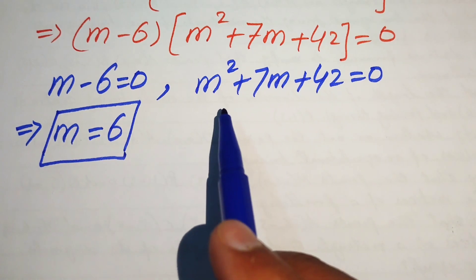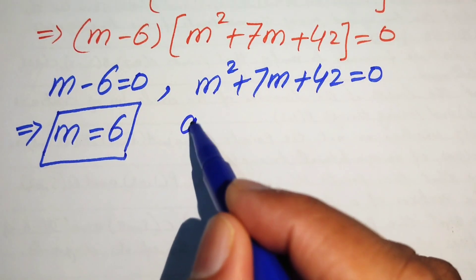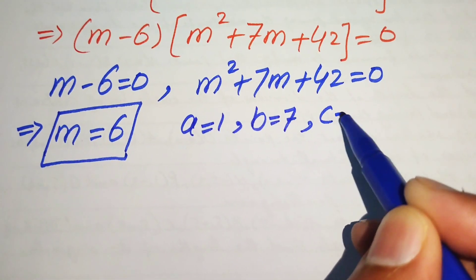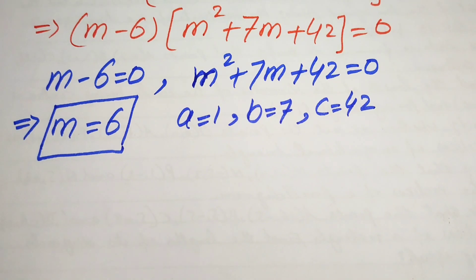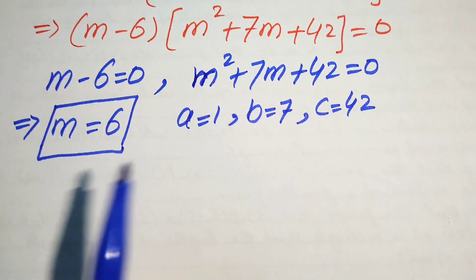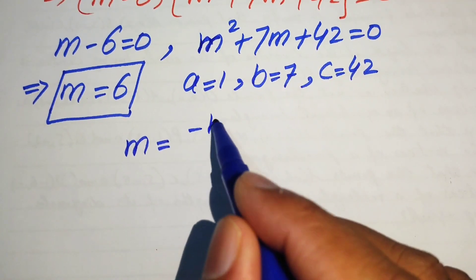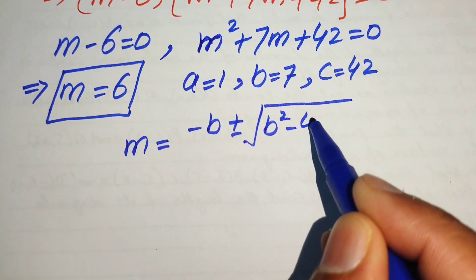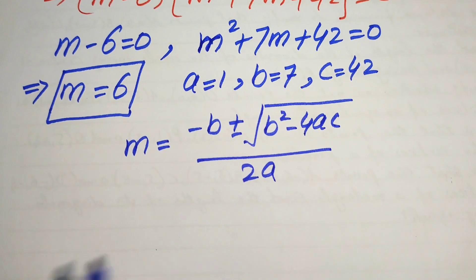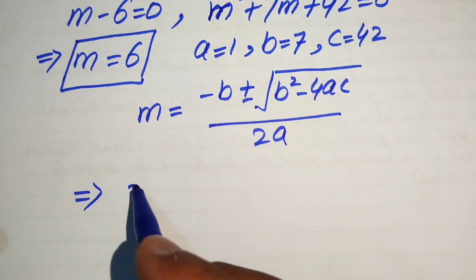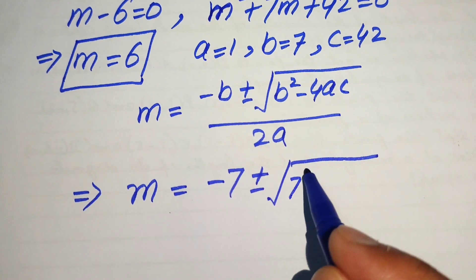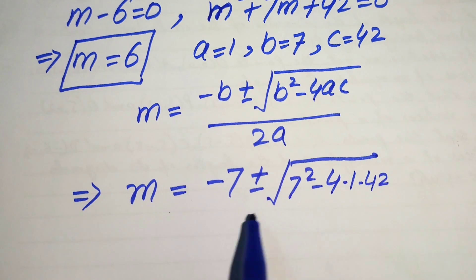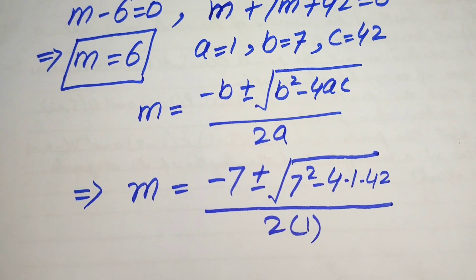For the quadratic m² + 7m + 42 = 0, the coefficients are a = 1, b = 7, and c = 42. We apply the quadratic formula: m = (−b ± √(b² − 4ac)) / (2a), substituting these values to get m = (−7 ± √(49 − 4·1·42)) / (2·1).